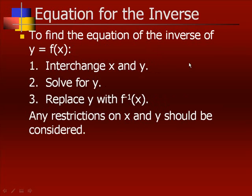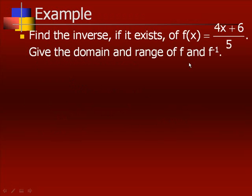To find the equation for the inverse function: first, interchange x and y; second, solve for y; then replace y with f⁻¹(x). Any restrictions on x and y should be considered in terms of domain. Find the inverse, if it exists, of the function f(x) = (4x + 6) / 5, and give the domain and range of f and f⁻¹.